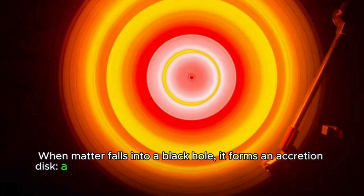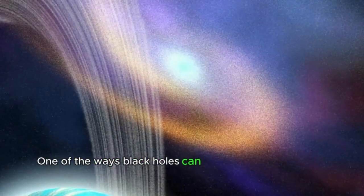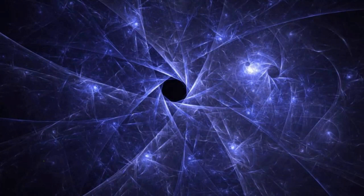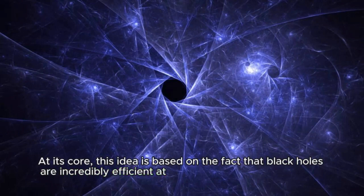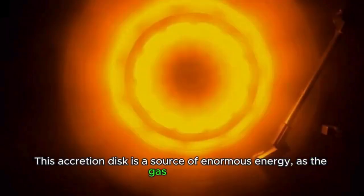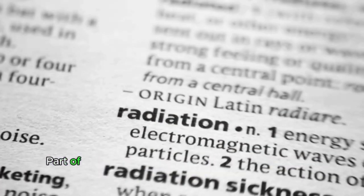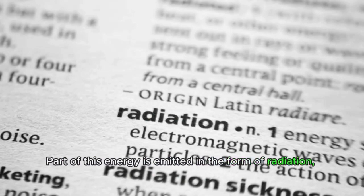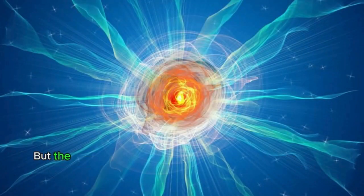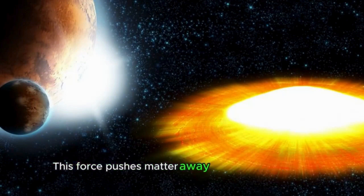When matter falls into a black hole, it forms an accretion disk, a rotating disk of superheated gas orbiting the black hole. One of the ways black holes can generate dark energy is through their accretion disk. At its core, this idea is based on the fact that black holes are incredibly efficient at converting matter into energy. This accretion disk is a source of enormous energy, as the gas is heated to incredibly high temperatures by the friction generated as it moves around the black hole. Part of this energy is emitted in the form of radiation including x-rays and gamma rays. But the most interesting aspect of an accretion disk is that it can create negative pressure, which is a force acting against gravity. This force pushes matter away from the black hole.